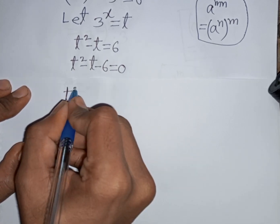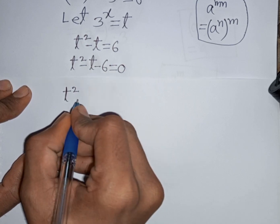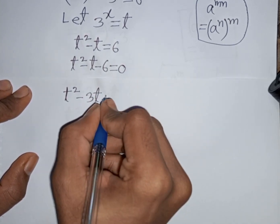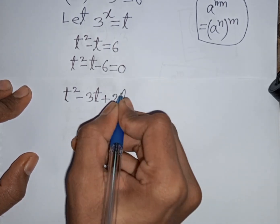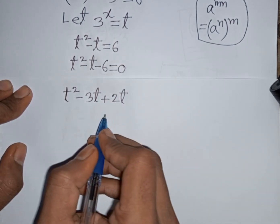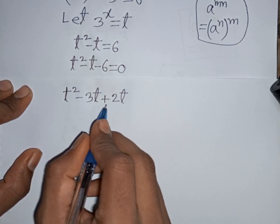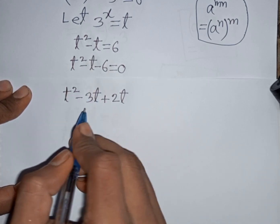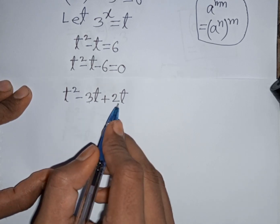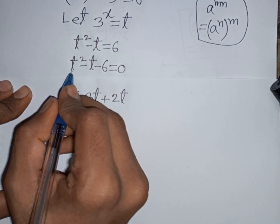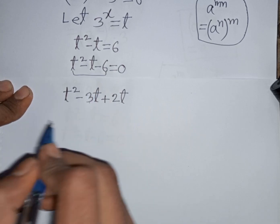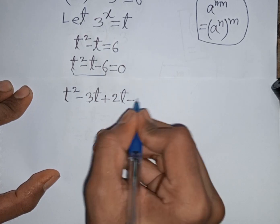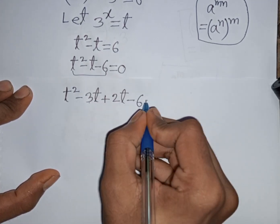t square minus t can be written as minus 3t plus 2t. This is called middle term factorization because minus 3t plus 2t gives minus t, and this times this will be the same as the outer product. So this is the middle term factorization, then minus 6 is equal to 0.